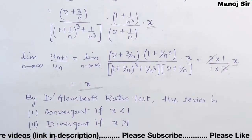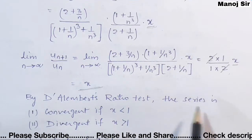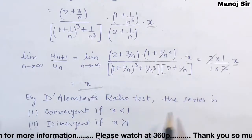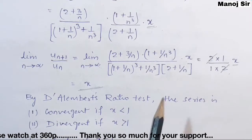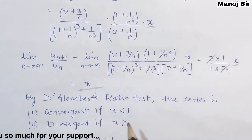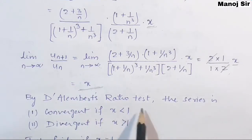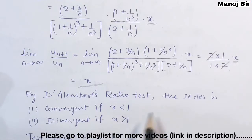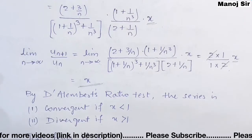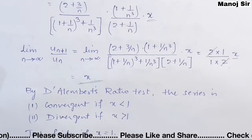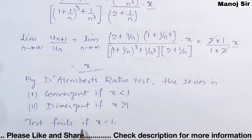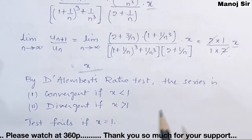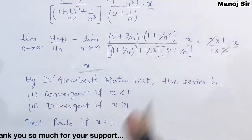By D'Alembert's ratio test, the series is convergent if x < 1, and divergent if x > 1. The behavior of the series depends solely on the value of x. However, the D'Alembert ratio test fails when x = 1. For that case, we need to apply the comparison test, as done in videos 11 to 13.